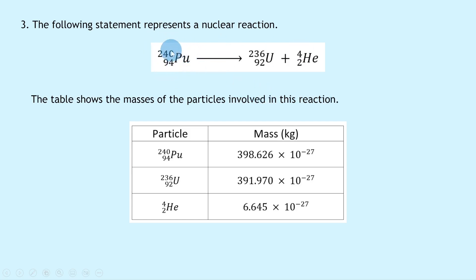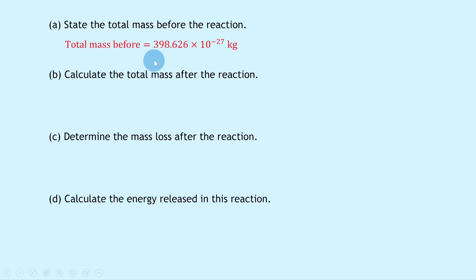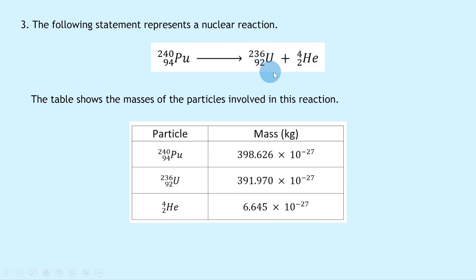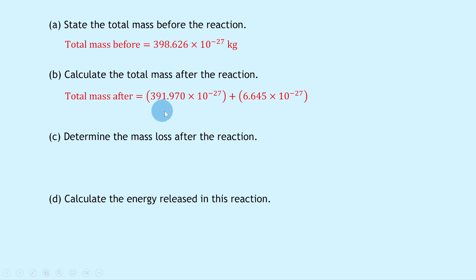Part a asks for the total mass before the reaction. The only thing on the left-hand side is the plutonium nucleus, so the total mass before equals 398.626×10⁻²⁷ kilograms. For part b, we calculate the total mass after the reaction — that's the uranium nucleus plus the alpha particle, so we add 391.970×10⁻²⁷ plus 6.645×10⁻²⁷, giving 398.615×10⁻²⁷ kilograms.